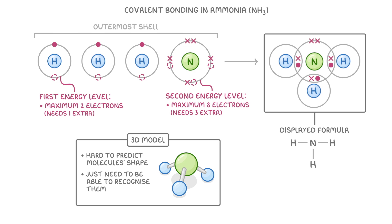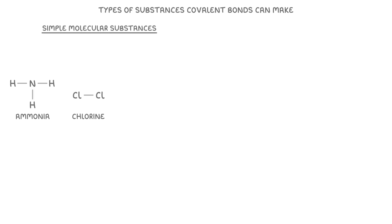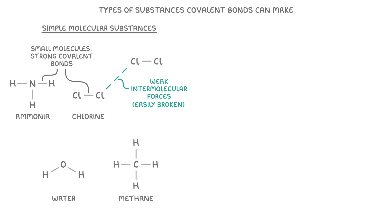The last thing we need to cover is the types of substances that covalent bonds can make. The examples we've seen so far like chlorine and ammonia are called simple molecular substances, which are small molecules in which the atoms in the molecule are joined by strong covalent bonds, but between the individual molecules there are only weak intermolecular forces which are easily broken. Other simple molecular substances worth knowing are water which is H2O and methane which is CH4.